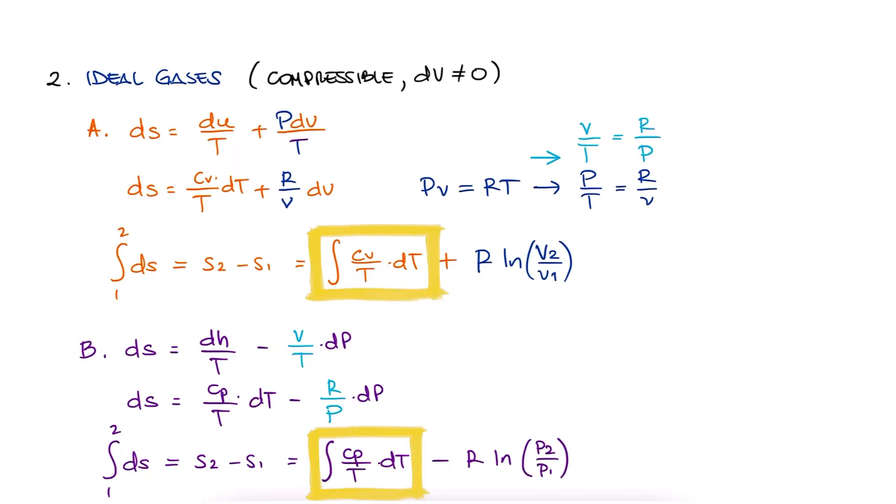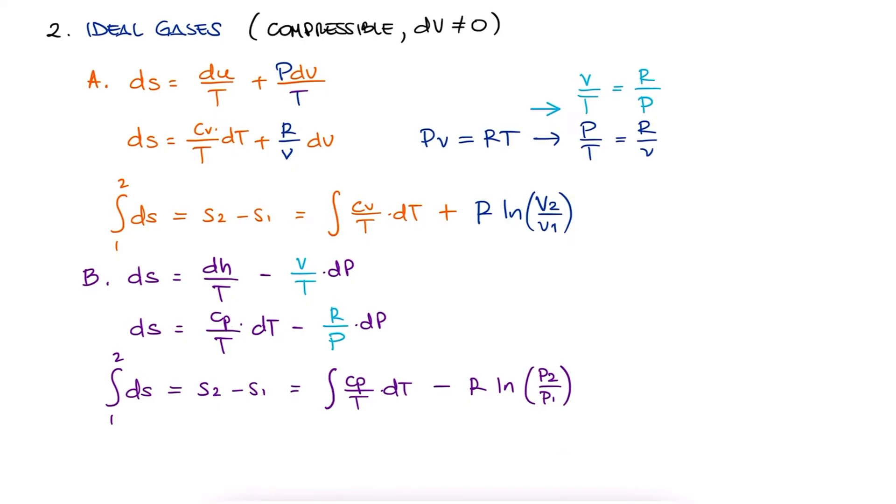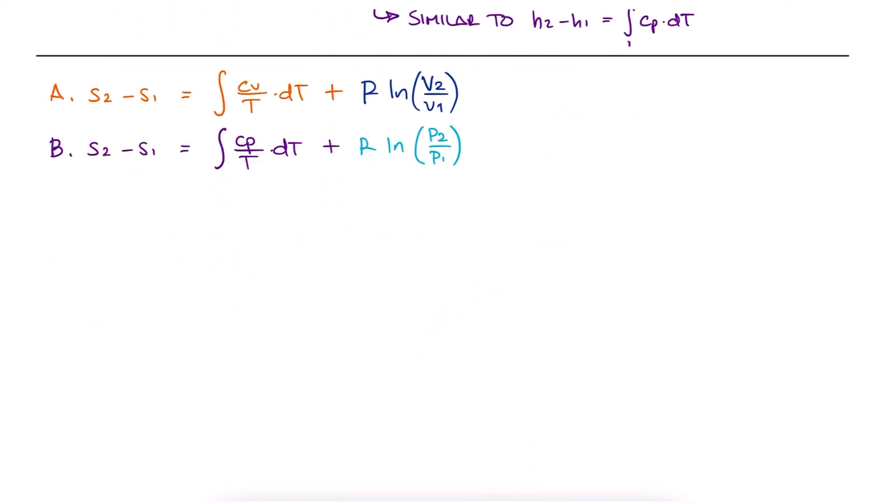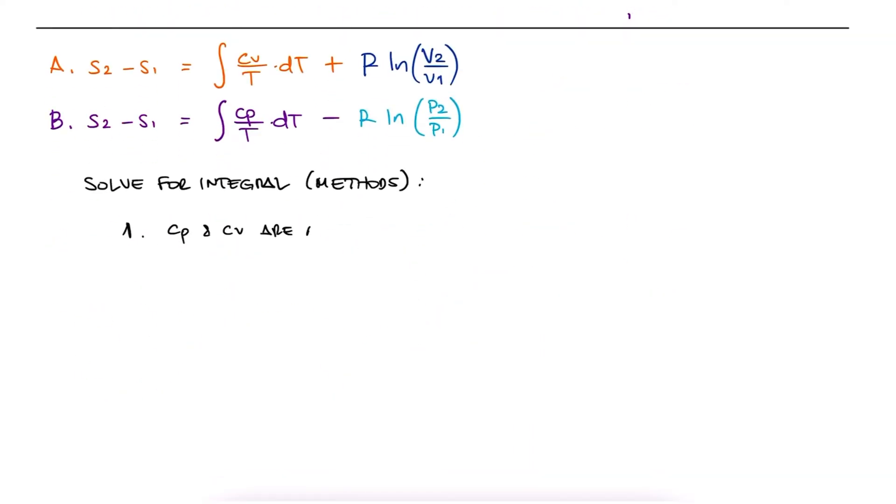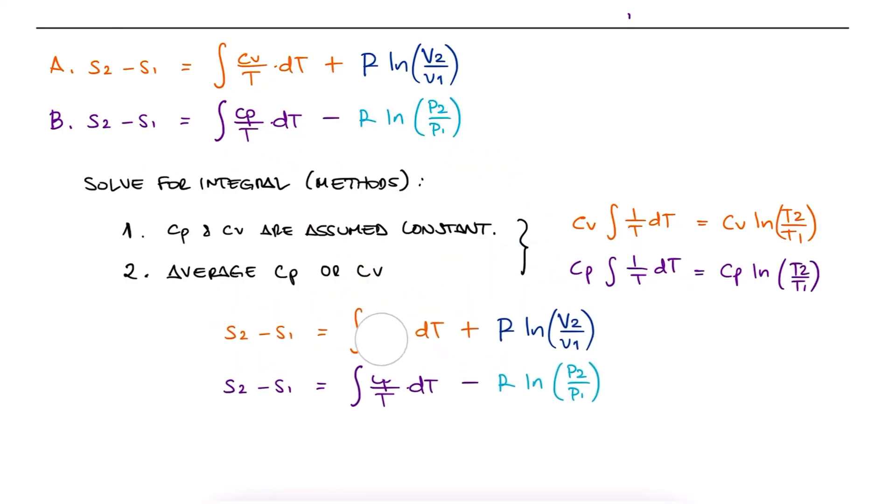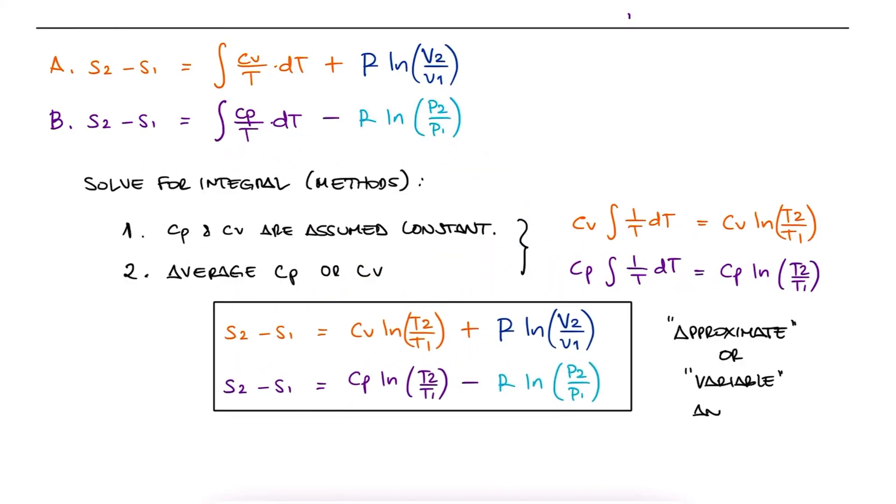Now for the leftover integrals, we have the same options we had in the past for calculating change in enthalpy and change in internal energy. We can assume that cp and cv are independent of temperature, or we can take an average value for cp and cv, and therefore bring them out of the integral. In that case, we would be left with the integral of dT over T, which is just another natural log. This is what is known as an approximate or variable analysis.